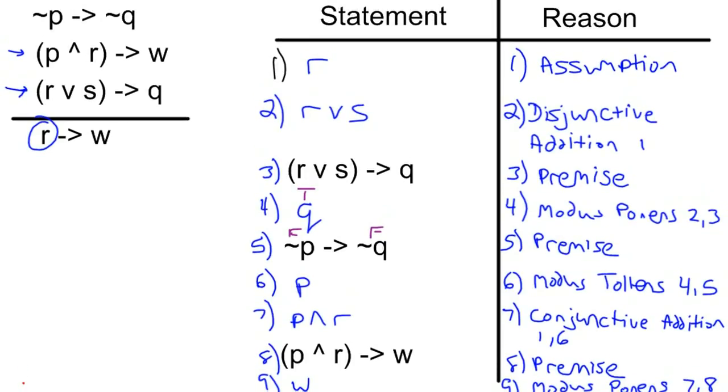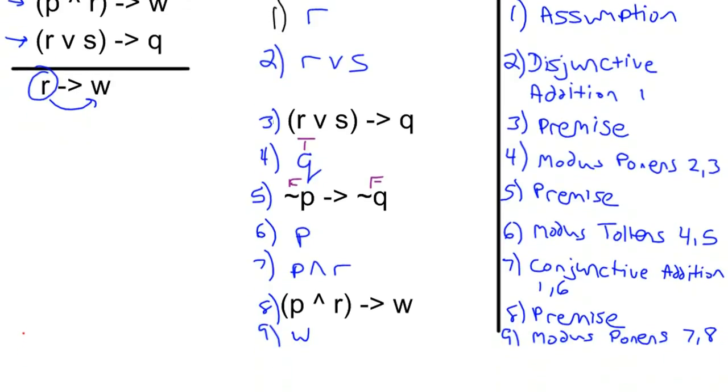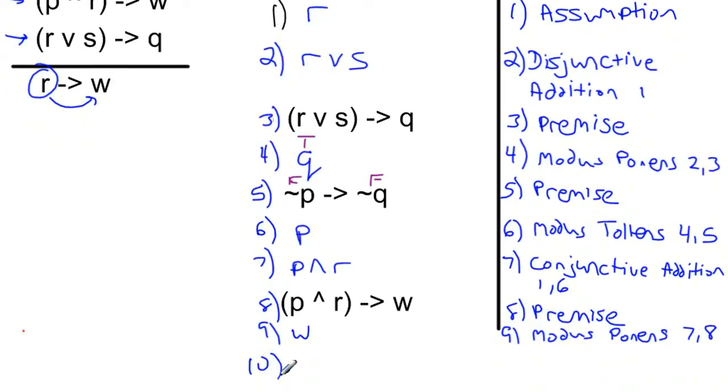And now our ultimate goal was to show that R implies W. Well, we have R. We ended up with W. So lastly here, we can state that R does in fact imply W. And there's our conditional proof.